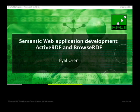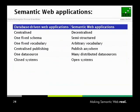If you want more details, you can read the papers — I'll give you the links later. If you look at a typical database-driven web application, it's usually a centralized application where you have one point of control. There is a fixed schema decided at design time, a fixed vocabulary chosen for your application, one central point of publishing, one data source. It's basically a closed system — it's your system, your data, your app.